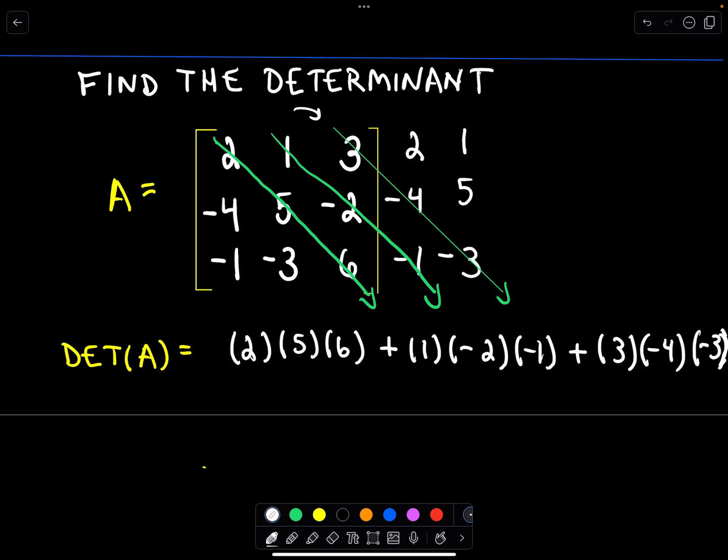And now we do the same thing, except we look at the bottom row instead of the top row. And now I go up and to the right. So there's one arrow, there's two arrows, and there's three arrows.